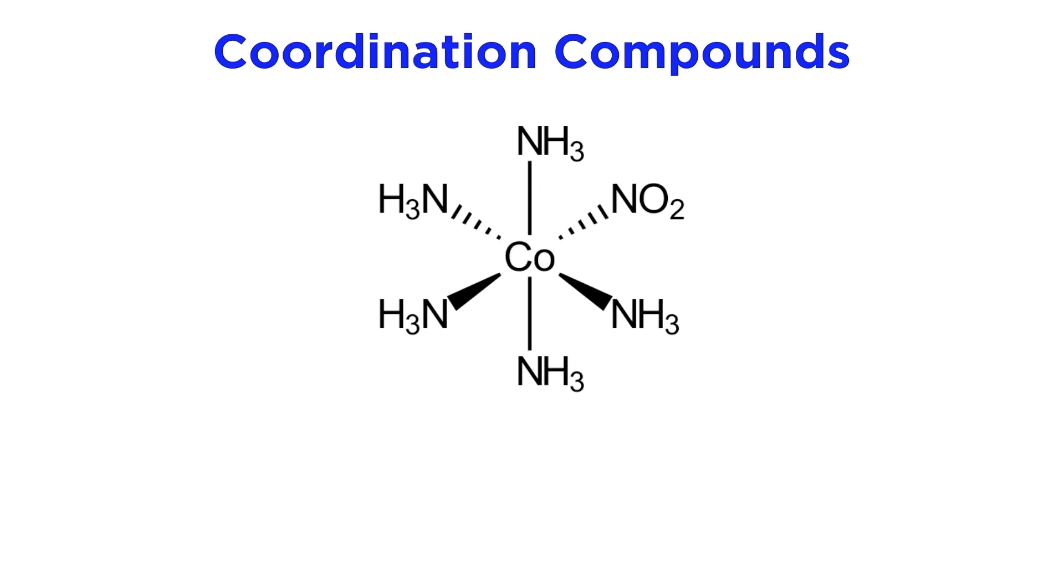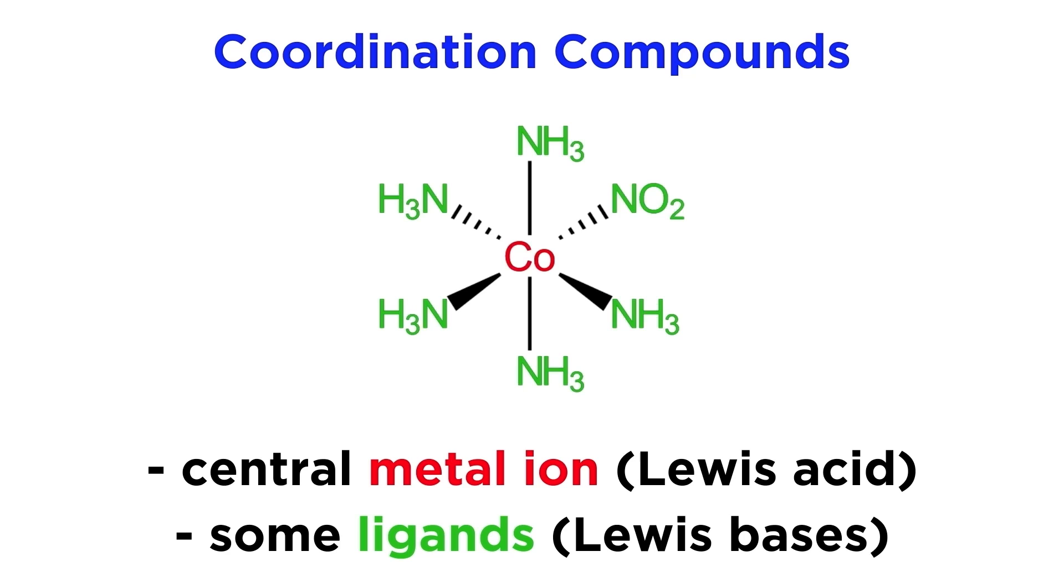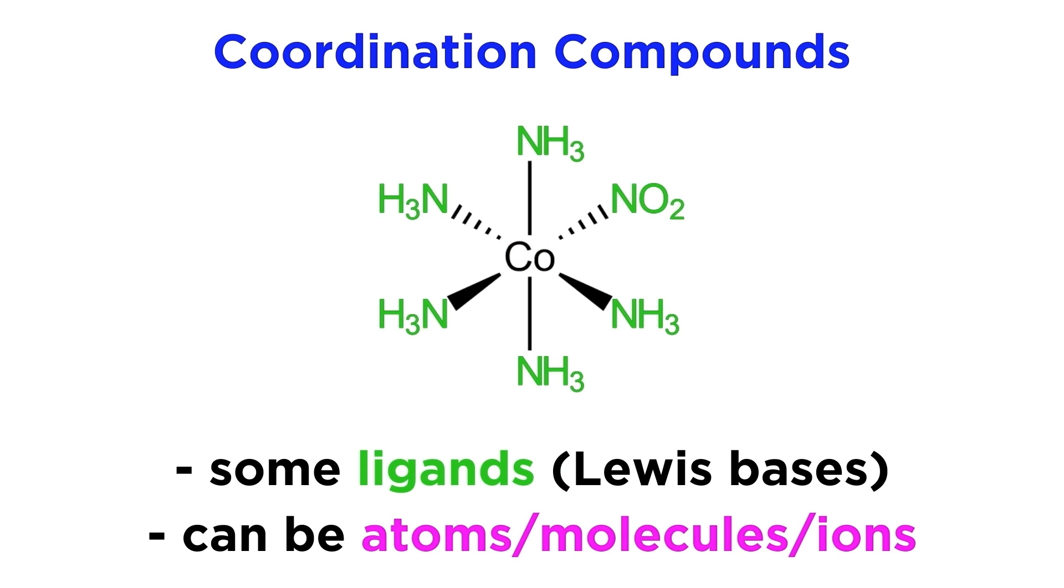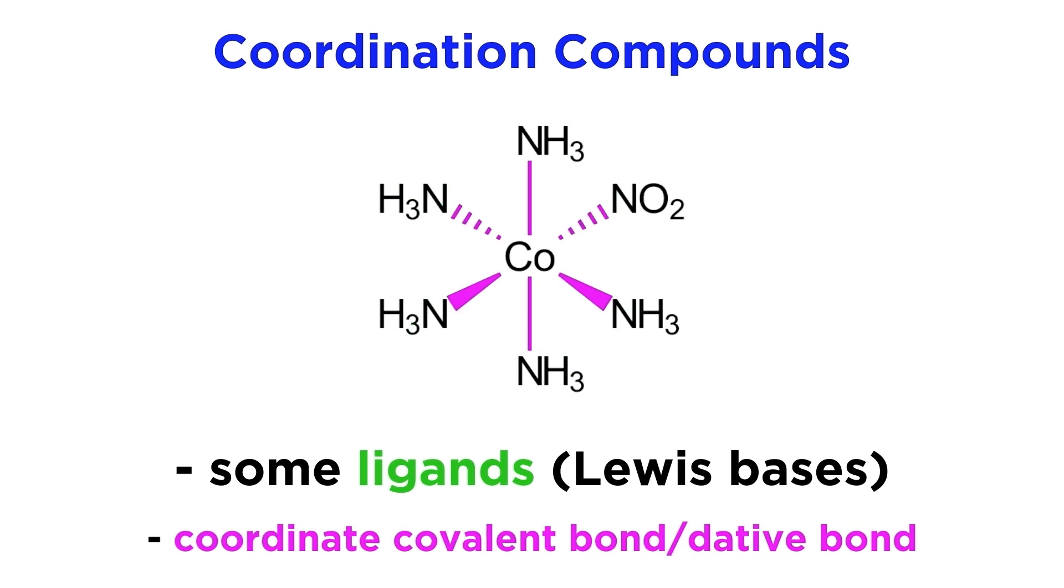Coordination compounds are compounds in which a central metal ion acts as a Lewis acid and a certain number of ligands, each with some electron excess, act as Lewis bases and coordinate to the central atom to form a complex. These ligands can be atoms, molecules, or ions, but they usually have a lone pair that can coordinate to the electron-deficient metal ion to form what is called a coordinate covalent bond, sometimes also called a dative bond.